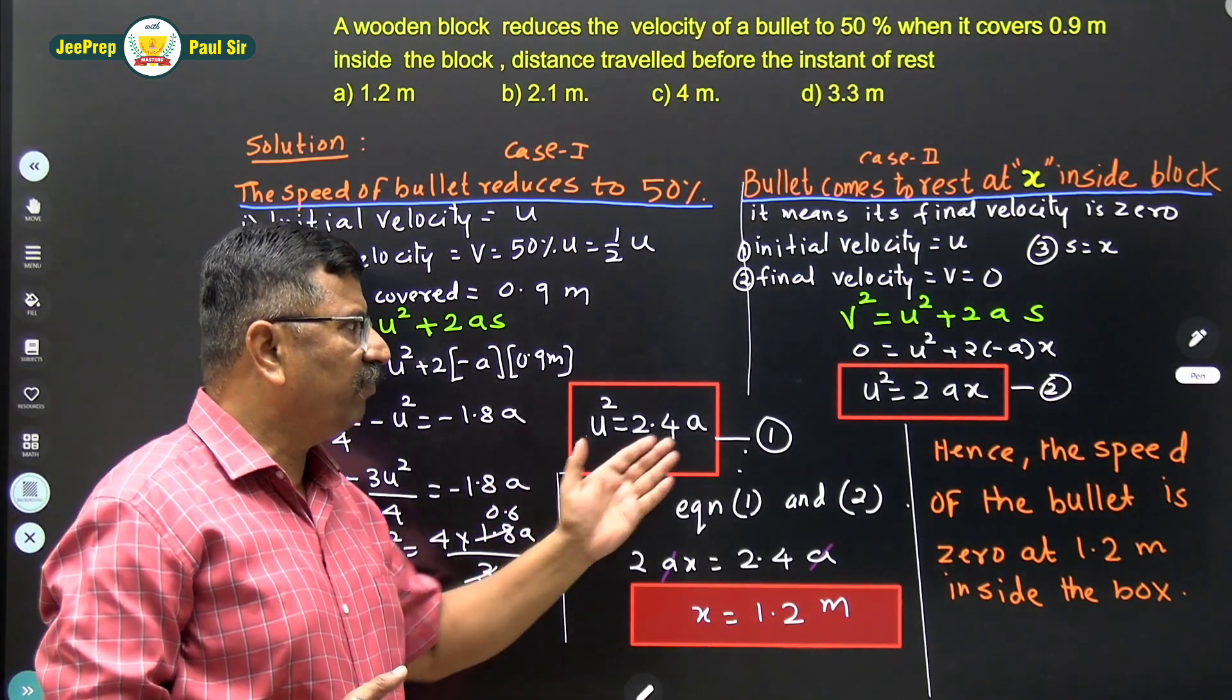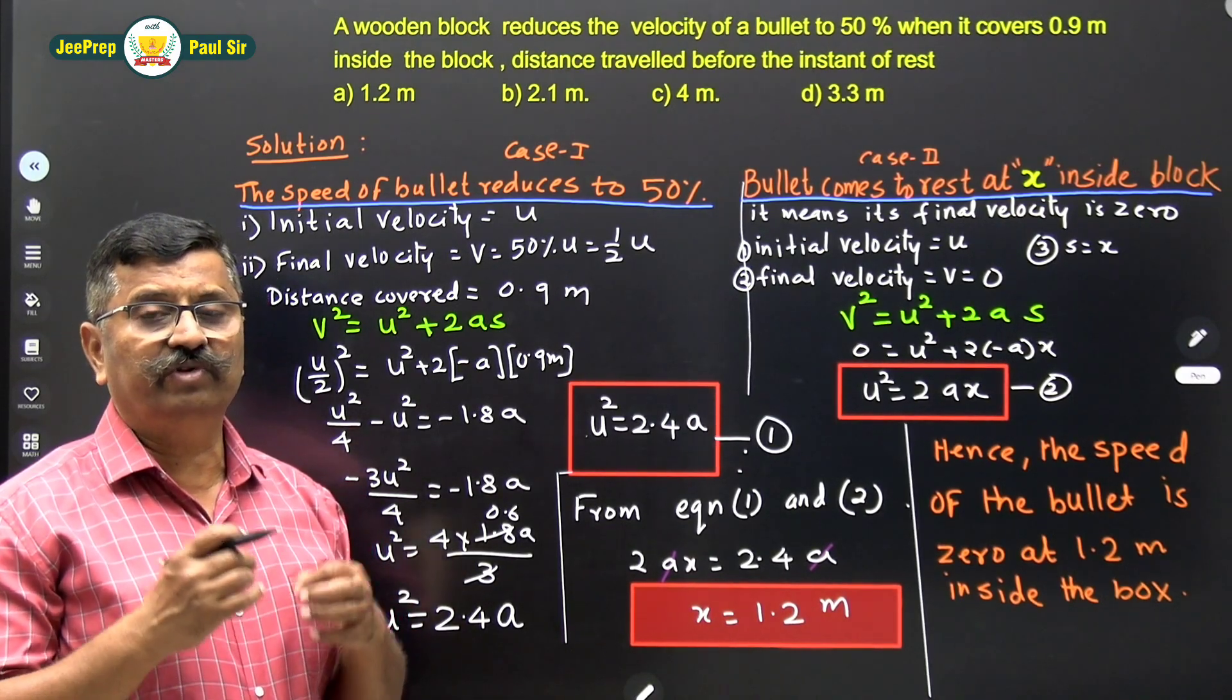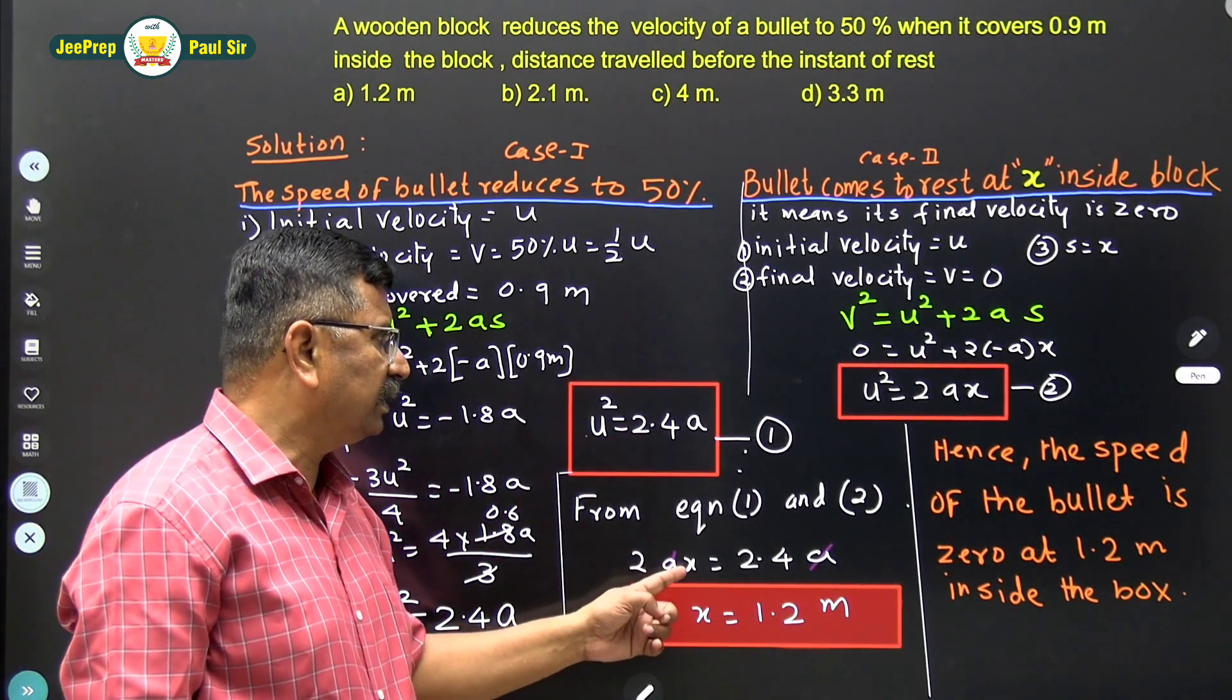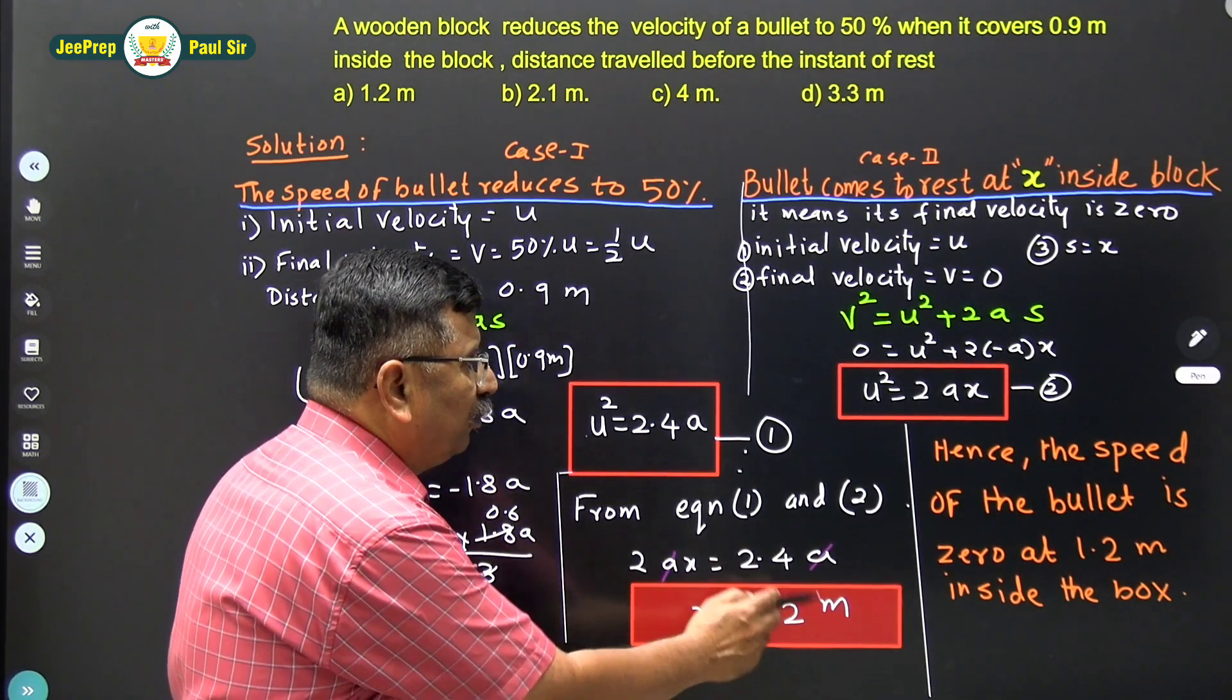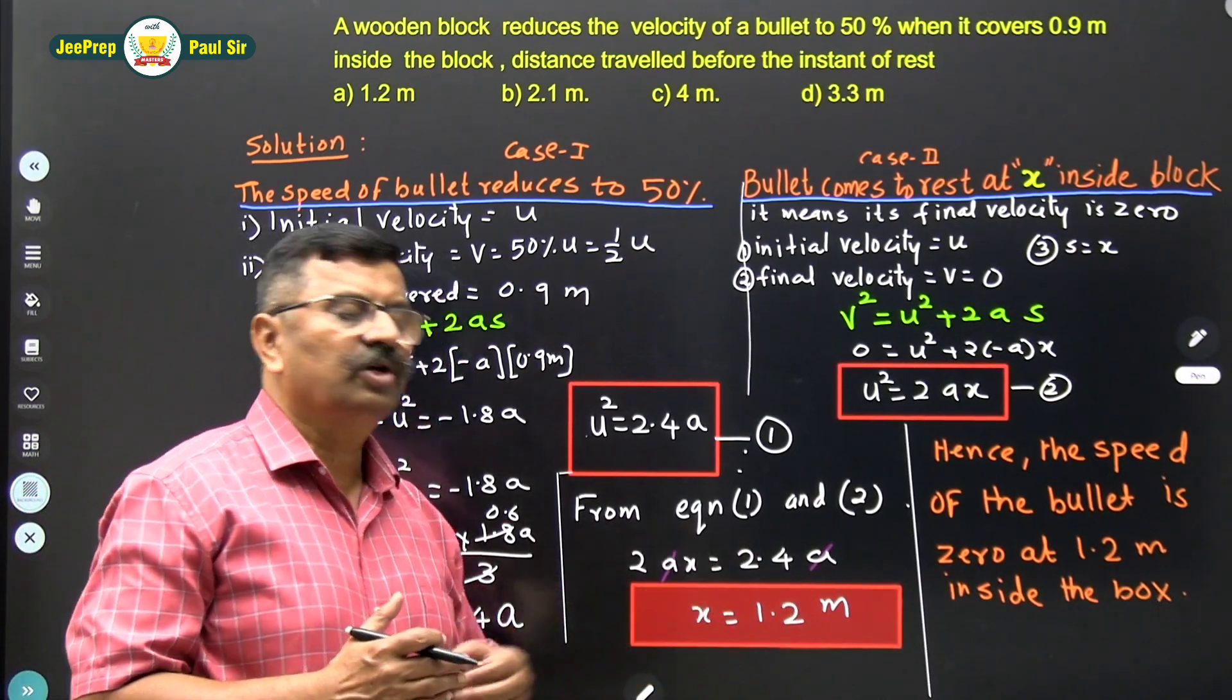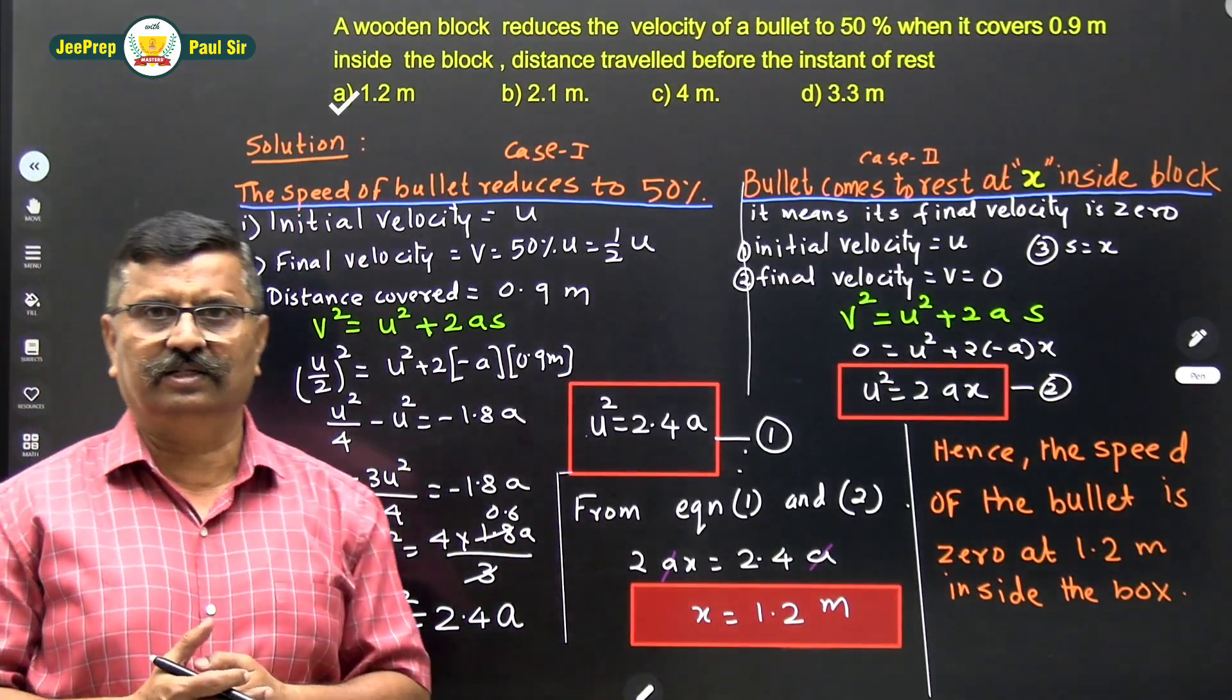Now, these two equations, equation 1 and equation 2 gives the same thing. That is the initial velocity of the bullet with which it has been fired. So therefore, we will equate these two equations and we will get 2ax is equal to 2.4a and x is equal to 1.2 meter. Hence, the bullet will come to rest inside the wooden block at a distance of 1.2 meter. So, the correct option is 1.2 meter. That is the first answer.